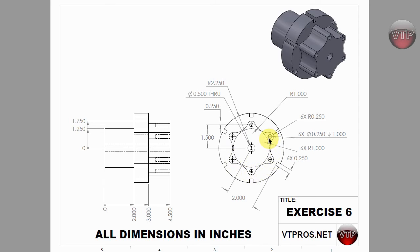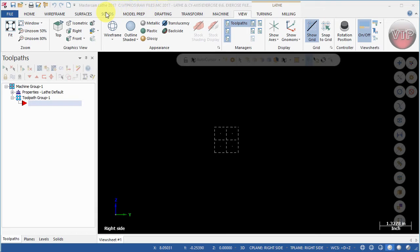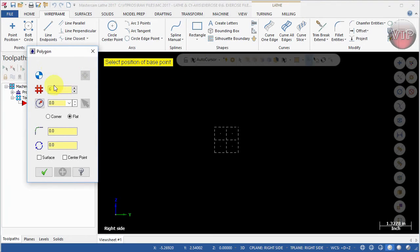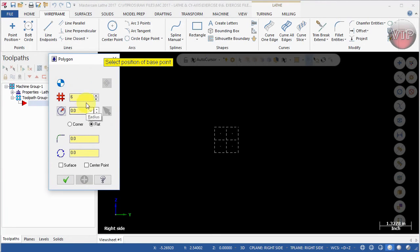The best way to connect those is by drawing a polygon. Also, from the center of my circles to the center of my part is one and a half inches, so that's going to be the radius of 1.5. I'll minimize my part and get started by going to Wireframe and selecting Rectangle Polygon — this is your polygon feature.